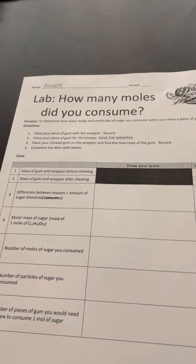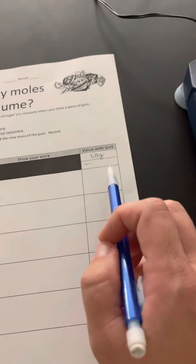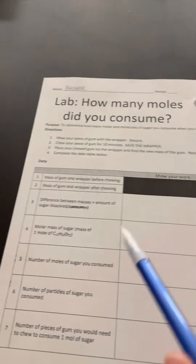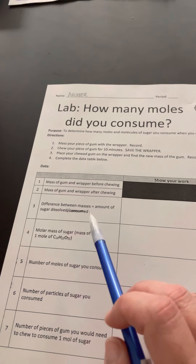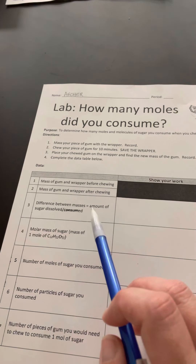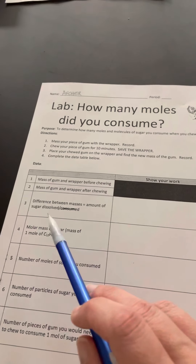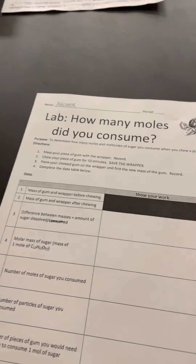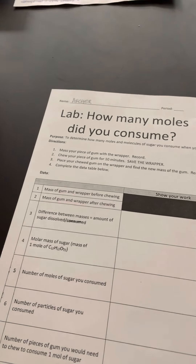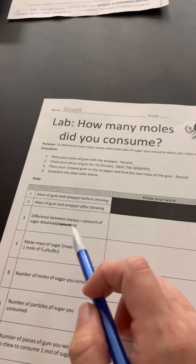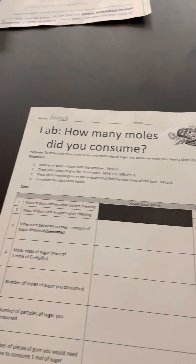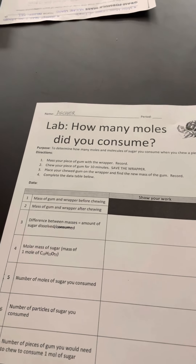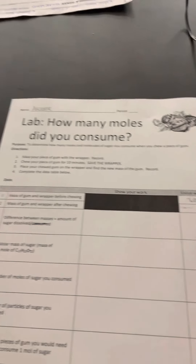So what's going to happen after that — once I have my final mass — you're going to calculate the difference between the masses. That amount is the amount of sugar that has been dissolved into your mouth and consumed by your body, because the gum material doesn't really go away. Once you figure out the difference of the mass, that's going to be in grams also.